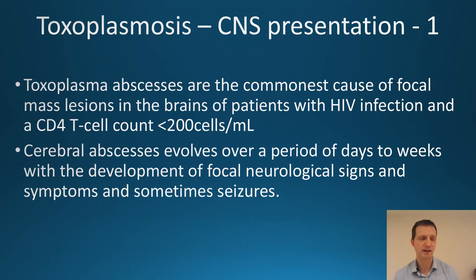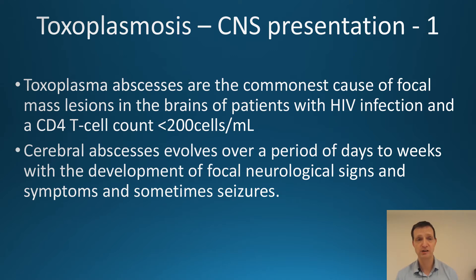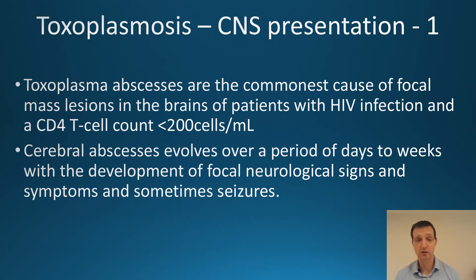So how does it present? I'm mainly going to focus on central nervous system presentation. Toxoplasma abscesses are the commonest cause of focal mass lesions — note the plural — in the brains of HIV-infected individuals with a CD4 count below 200. The abscesses evolve over days to weeks with associated neurological signs and symptoms, and about 25 to 30 percent also present with seizures.